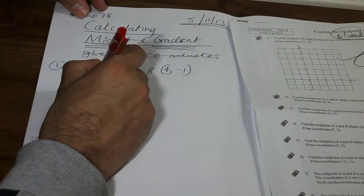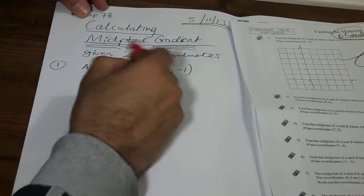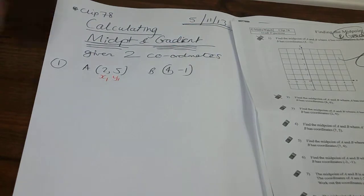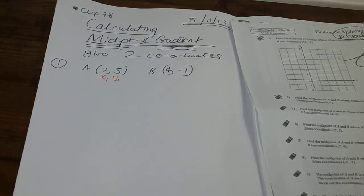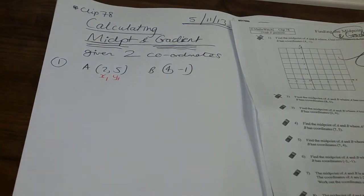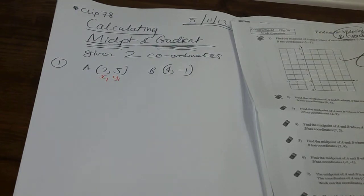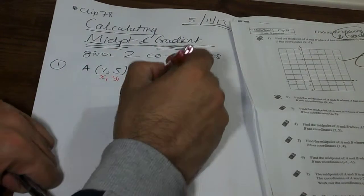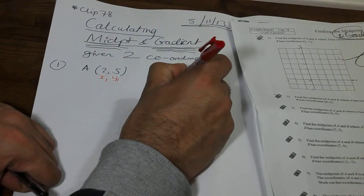So what we're going to do, we're going to label this first one here X1 and this is Y1. And we're going to label the second one X2 and Y2.